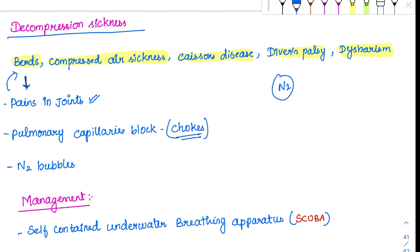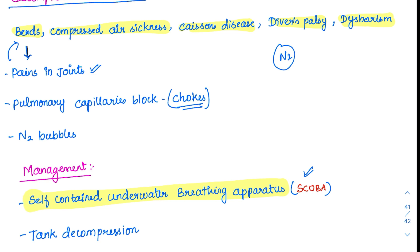For management, there is SCUBA — the self-contained underwater breathing apparatus — which alters pressures so the diver does not get this sickness. Second, there is tank decompression. Ideally, the person should not rapidly ascend but should spend time at various different levels. If he does rapidly ascend, he is placed in a tank where there is a slow reduction of partial pressure until it reaches normal.